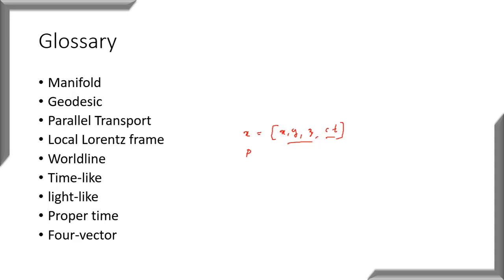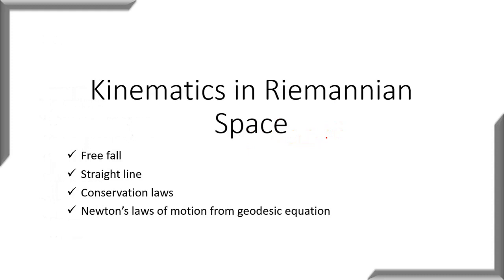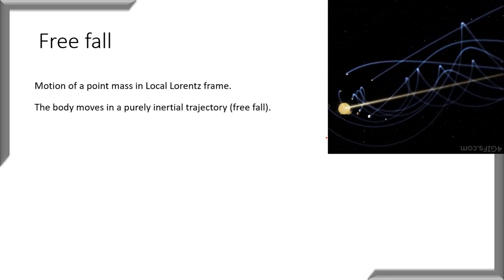Having said this, let me move on to the main portion. In this video we will be talking about kinematics in Riemannian space. When we talk about kinematics, we are talking about motion. The simplest motion we can define is motion in a straight line or free fall — motion that does not involve any forces, where the body is simply falling. Free fall is the simplest motion we can define.